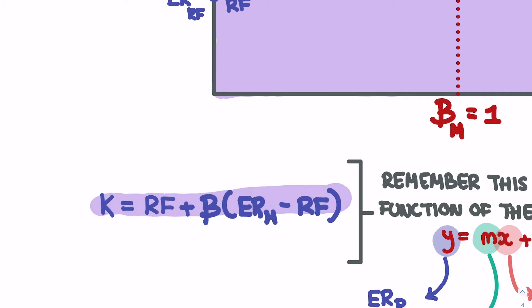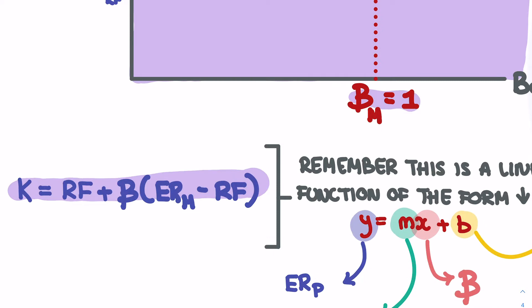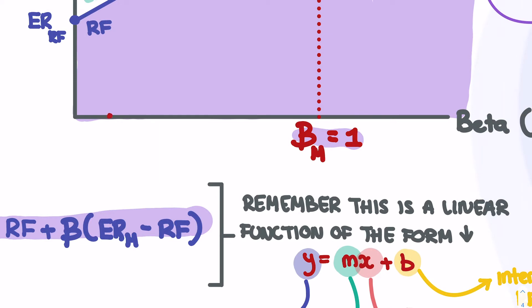The SML says that K is equal to RF plus beta times the market risk premium. And what we know is that beta equal to 1 will give you the market portfolio return. And we know that depending on any given point that we take, we could take beta is equal to 0.2,